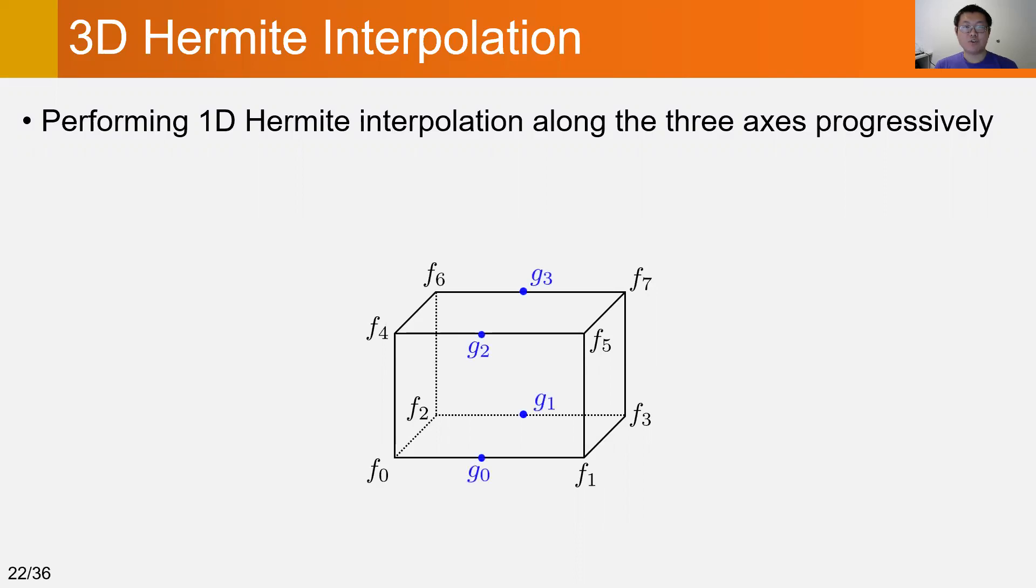As illustrated in this figure, we first compute the four blue points G0 to G3, then compute the two red points H0 and H1, and finally compute the value Q at the desired location.